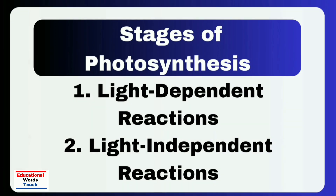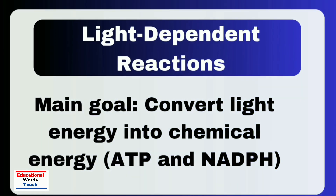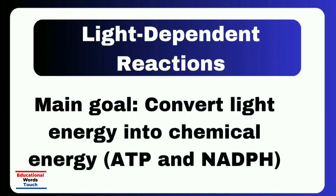The light dependent reaction is the first stage of photosynthesis and it takes place in the thylakoid membrane of the chloroplast. Plants use sunlight to energize electrons in the chlorophyll. When light strikes the pigment, water molecules are split into oxygen, protons, and electrons. The oxygen is released as a by-product.